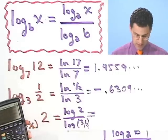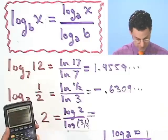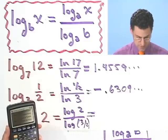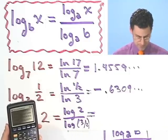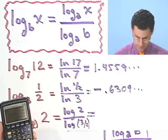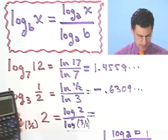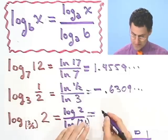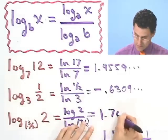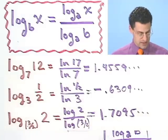Let's take the log of 2 and divide it by log of 3 divided by 2. And that equals 1.7 something. So that's 1.7095.